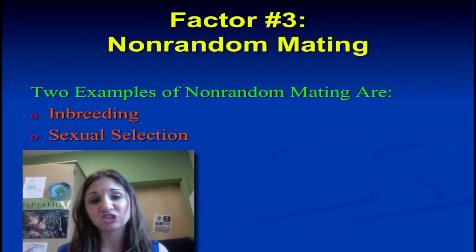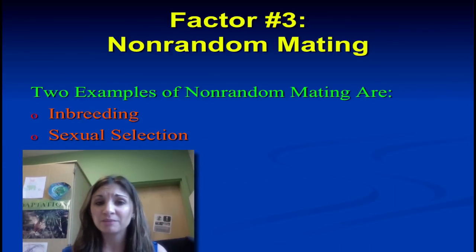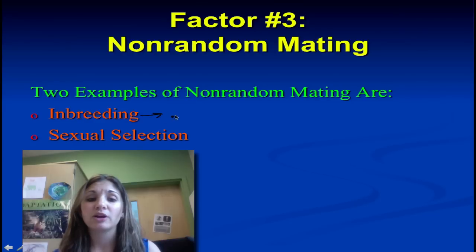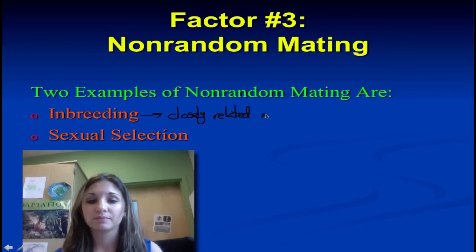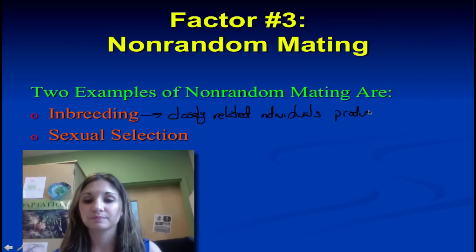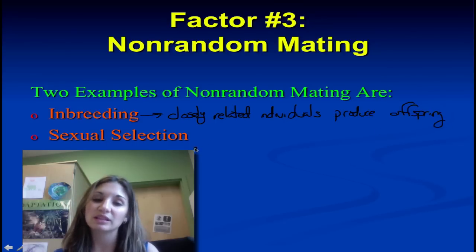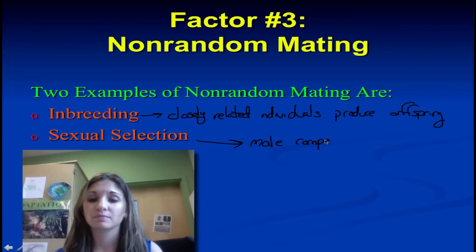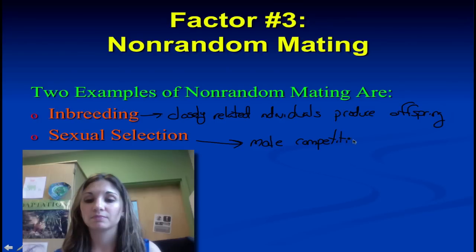The third factor that can influence a population and cause change is non-random mating, which comes in two different varieties. The first is inbreeding, where closely related individuals produce offspring. Then we have sexual selection, which can be broken into two different types: male competition for females or territory, or female choice.